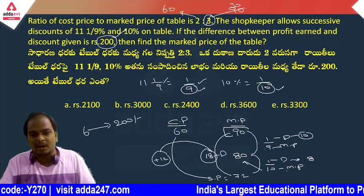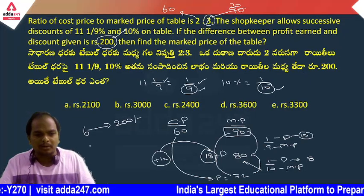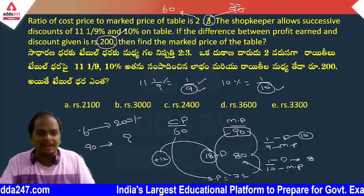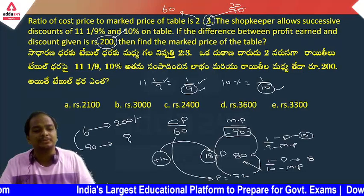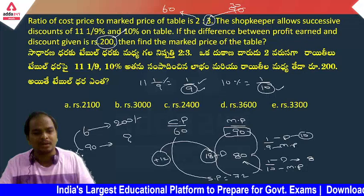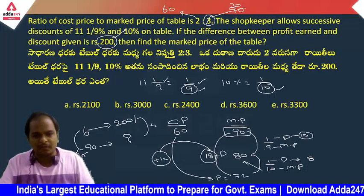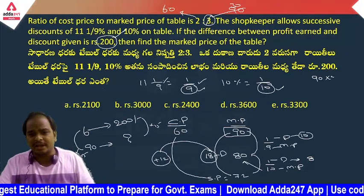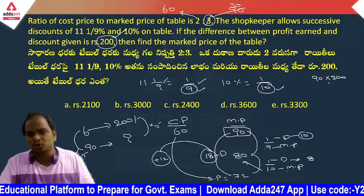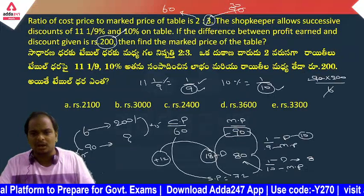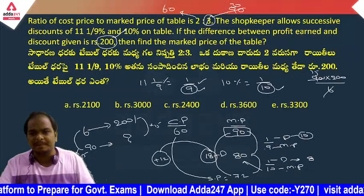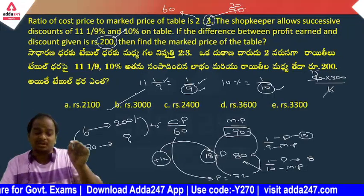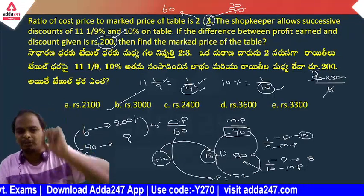So 6 parts value equals 200. Market price is 90 parts. 90 is 15 times 6, so market price is 15 times 200. That is 90 into 200 divided by 6. The market price is 3,000 rupees.